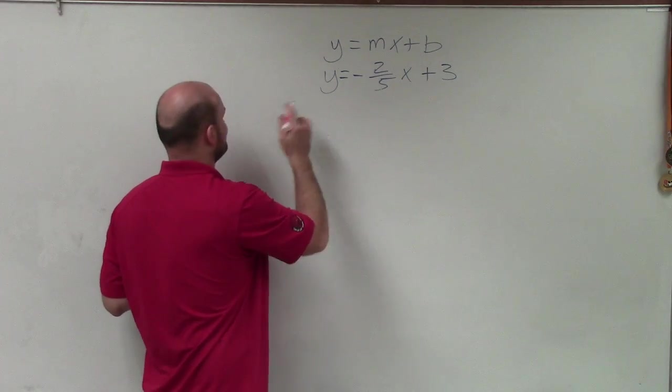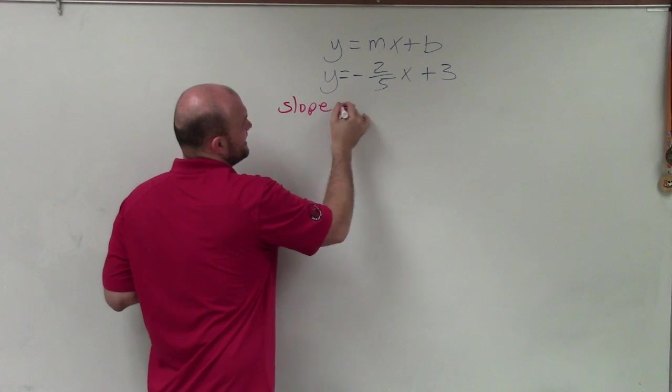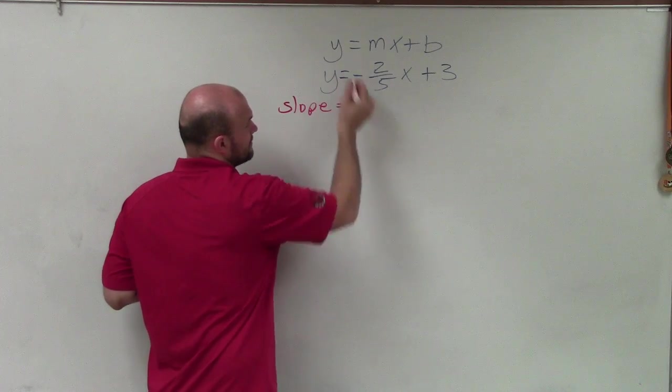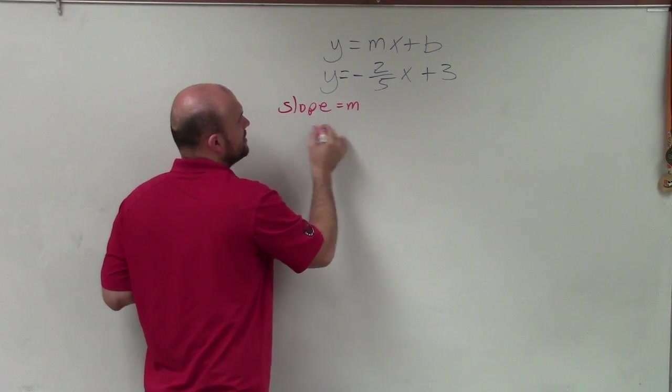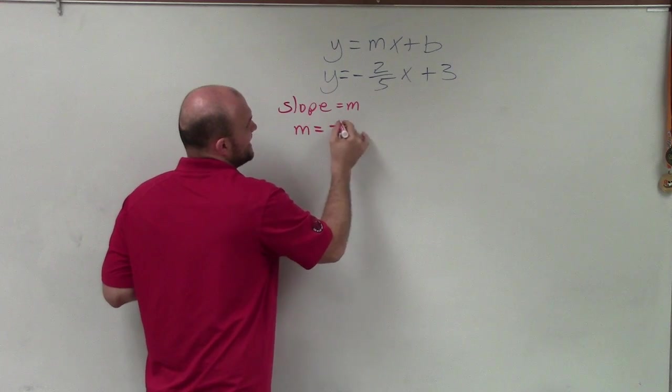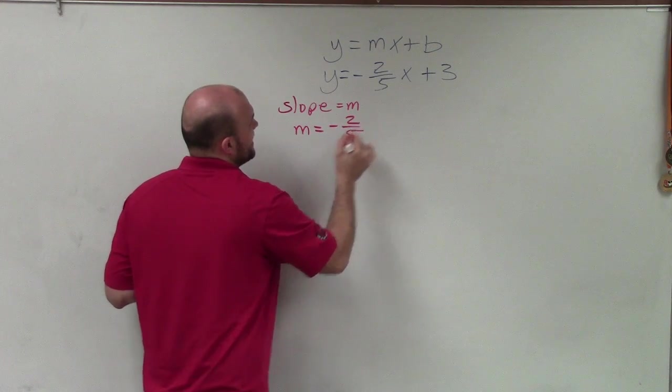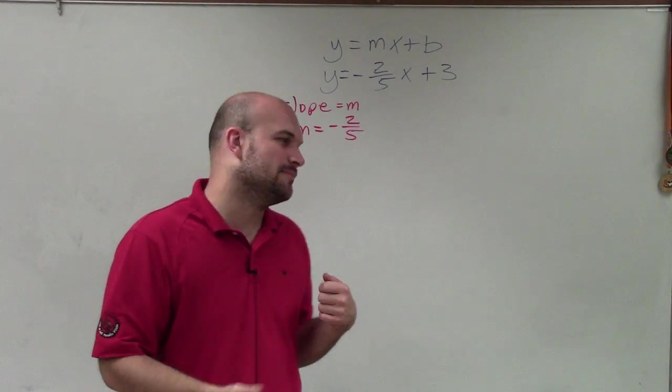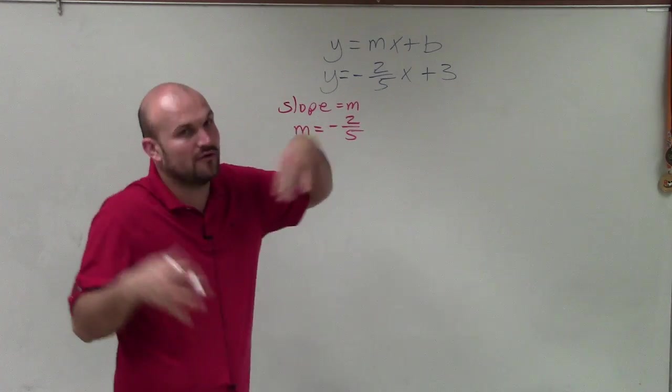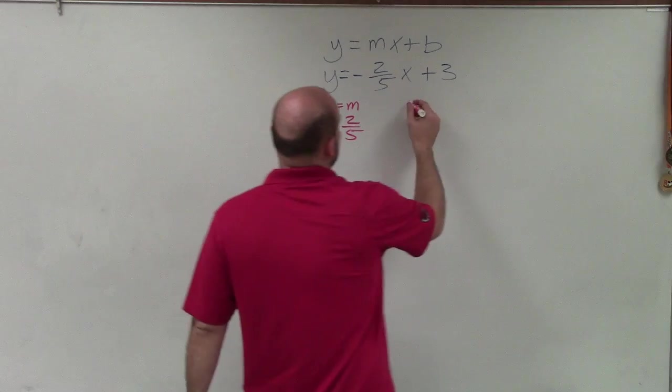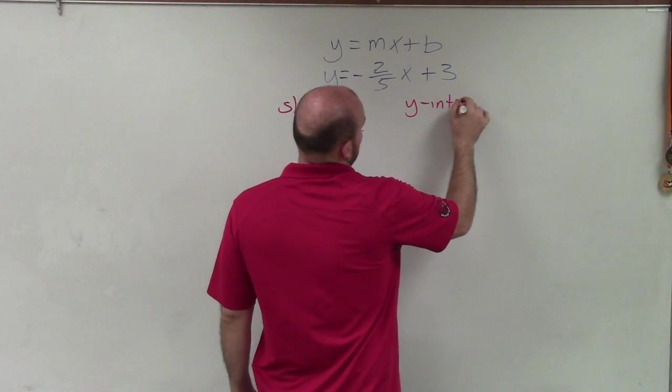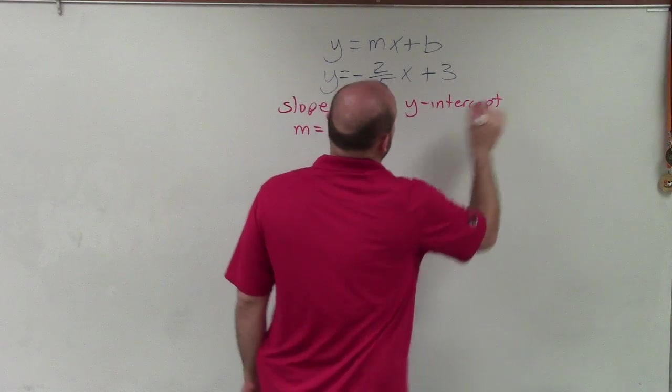So the slope is equal to m. In this case, my slope is negative 2 over 5. Now, the negative 2 over 5, we'll get to that a little bit, because the 2 could be negative or the 5 could be negative. And then my y-intercept—now remember, the y-intercept